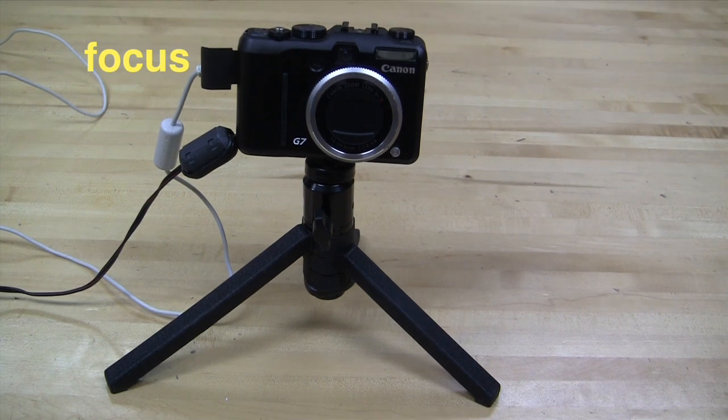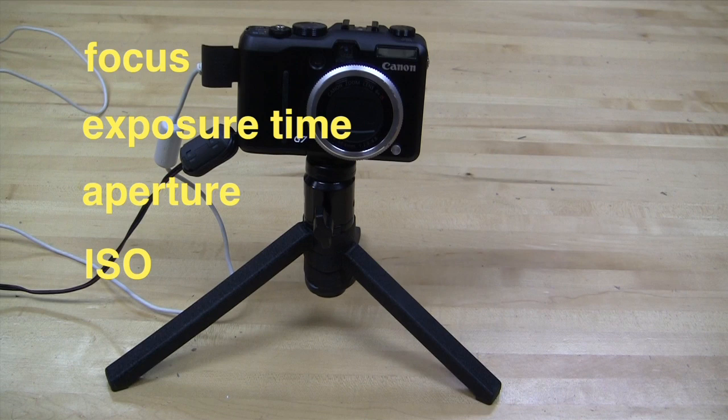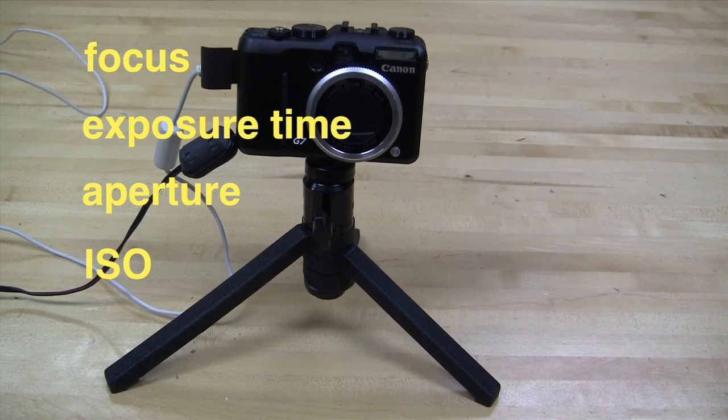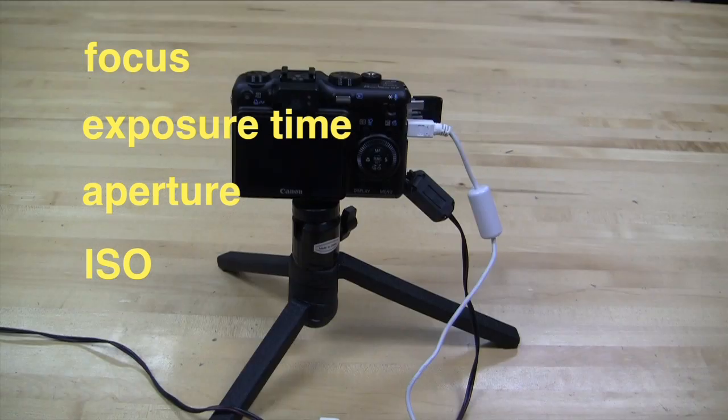In particular you'll learn about focus, exposure time, aperture and ISO. In automatic mode a digital camera will choose these settings for you, but if you want to take creative photographs you have to know how to choose them yourself.